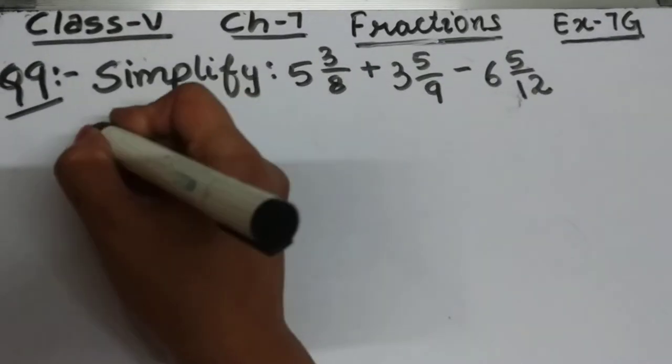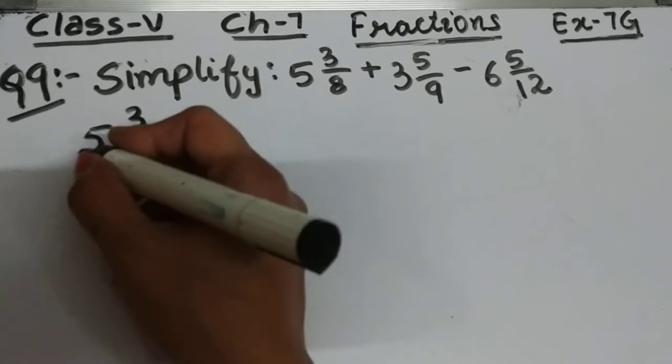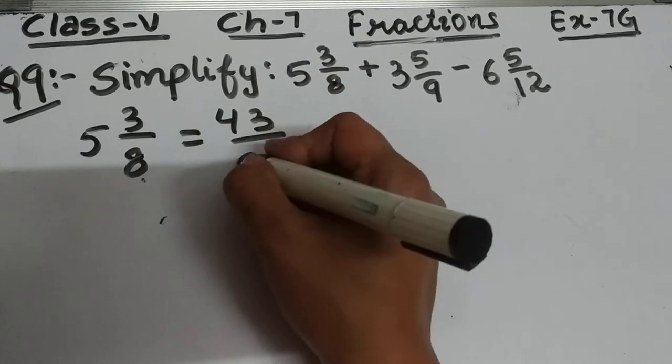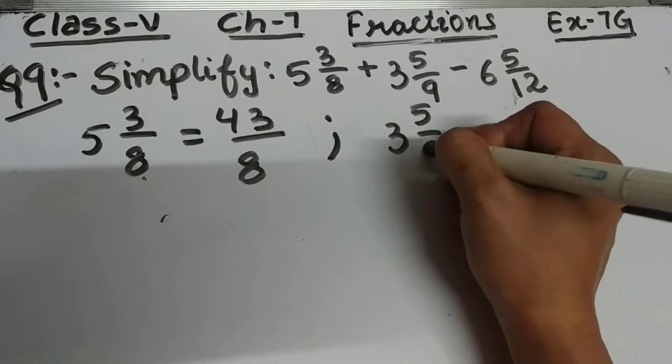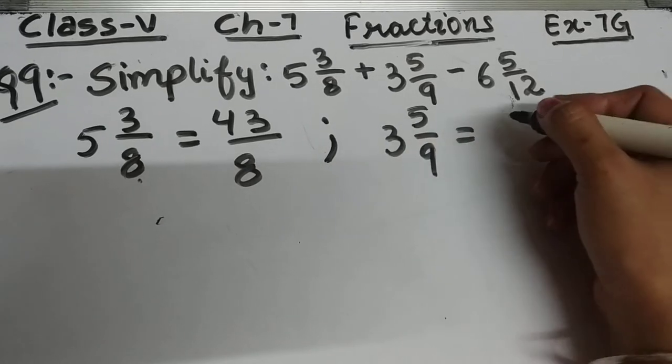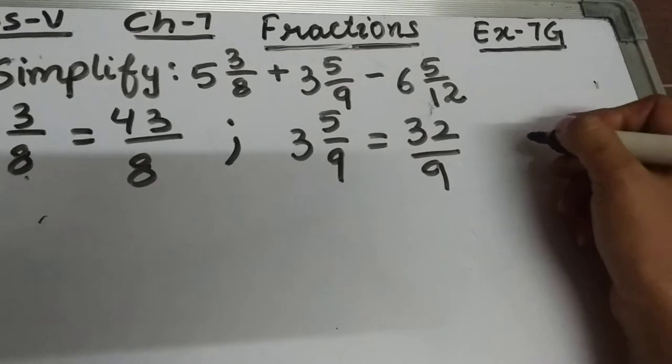5 3/8 will become 8×5=40, 40+3=43, so 43/8. 3 5/9 will become 9×3=27, and 27+5=32, so 32/9.